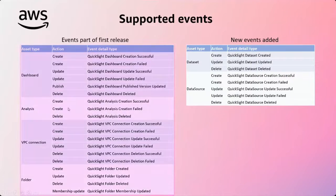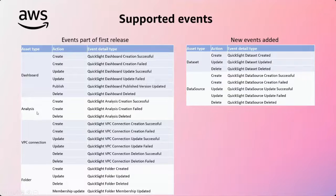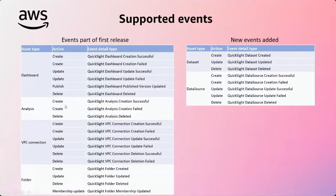On the left, you can see the events that are being released as part of the initial release, where you can see the dashboard analysis, VPC connection, and folders, which are already available with all the actions like create, update, and publish. And certain events like QuickSight dashboard update failed or error scenarios, whereas other things are successful conditions, update versions — all that can be used for content migration too.